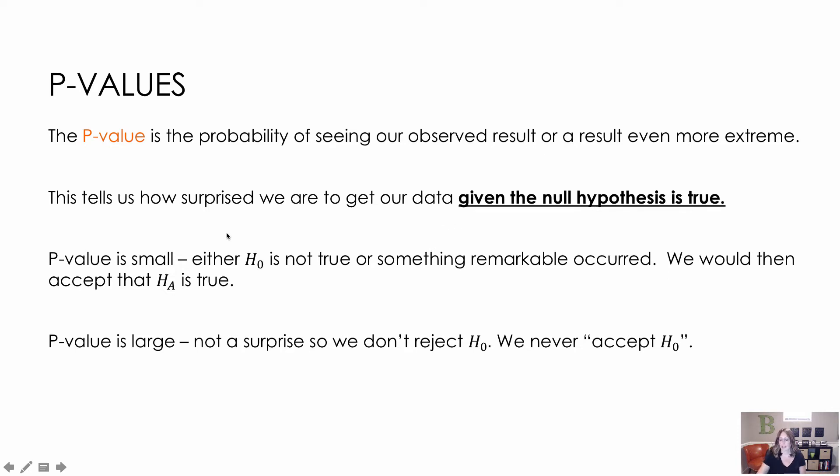So if p-value is very small, either our null hypothesis H₀ is not true, or something remarkable occurred. We would then accept that the alternative hypothesis is true instead.